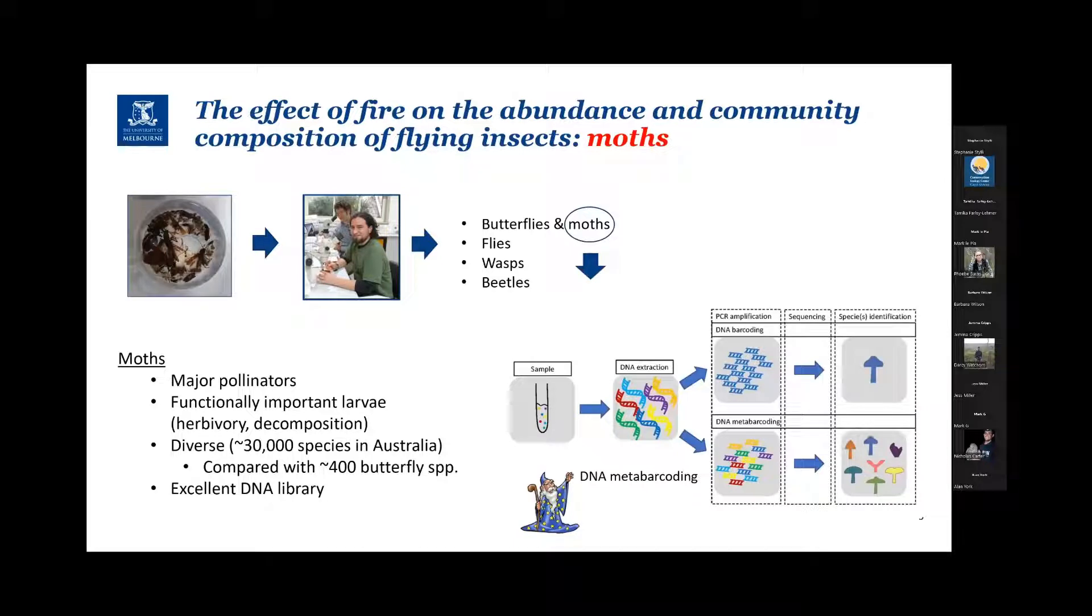So we took advantage of that by using a genetic approach to identifying our moths. You've heard today a little bit about eDNA, where a sample might be taken from soil or from water, and DNA is extracted and matched against a reference for a single species or maybe for individuals within a population of species. We use the wizardry of DNA metabarcoding, where you can have a sample that contains multiple species.